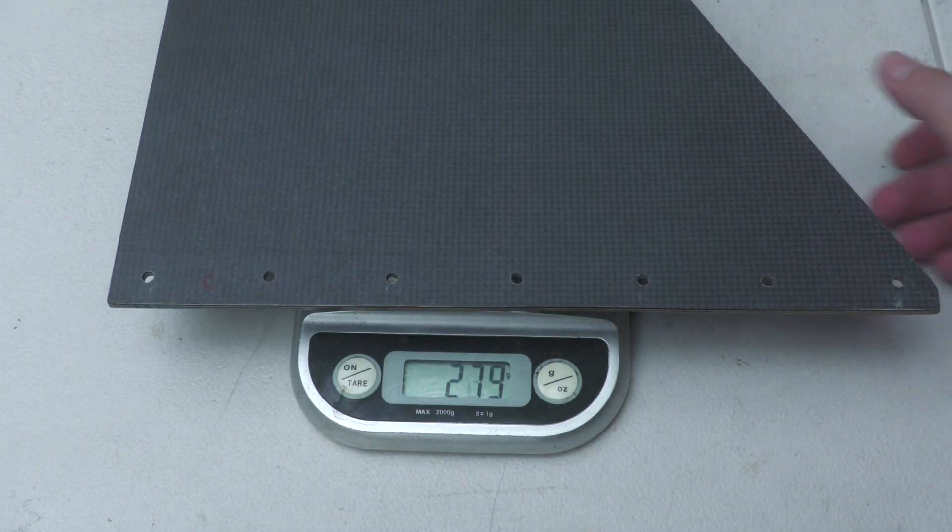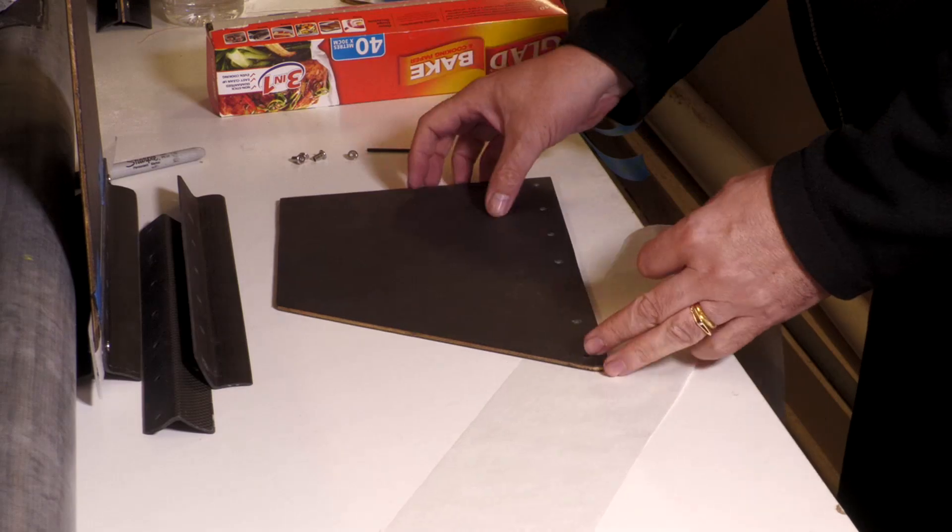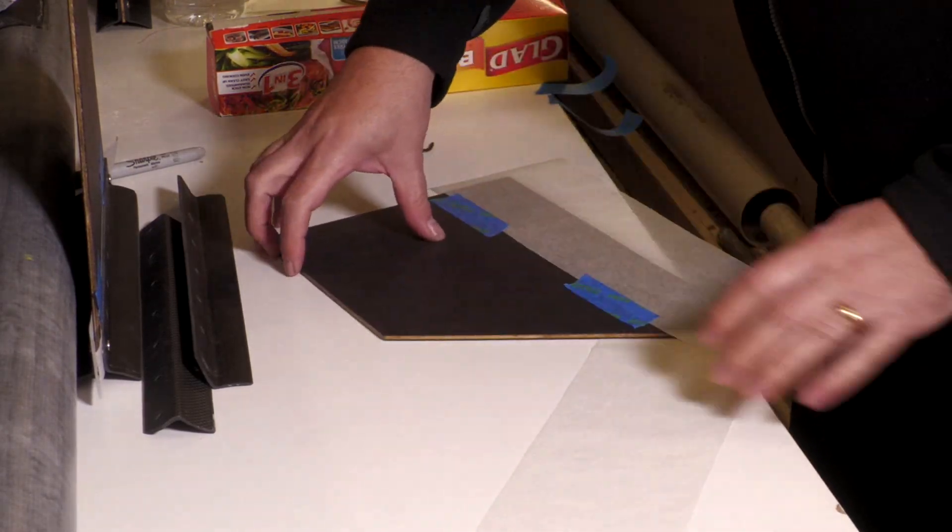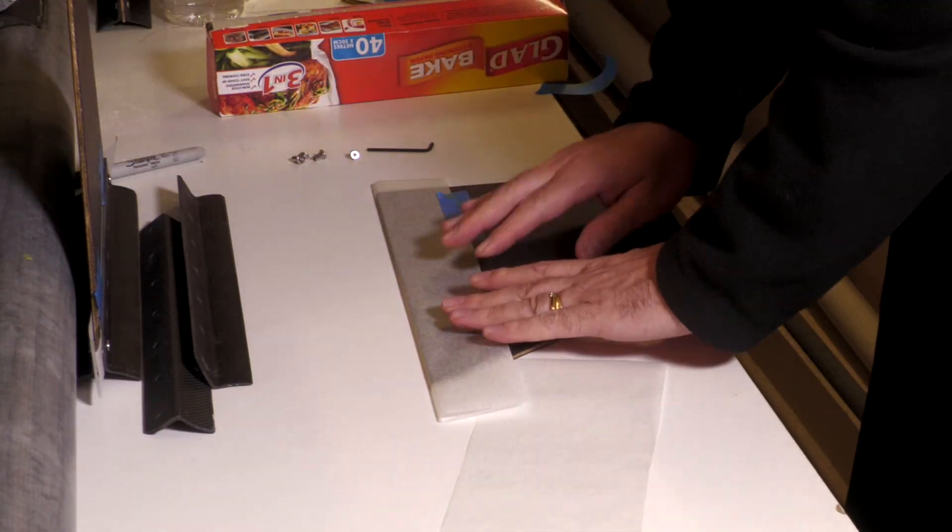Each fin weighed in at around 250 grams. Before attaching the brackets to the pressure chamber, we first added a wrap of baking paper to the fin. This would prevent the fin from sticking to the brackets.